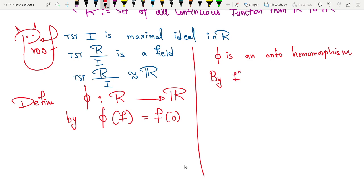By first isomorphism theorem, we can write R mod ker(φ) is isomorphic to ℝ. Now let's talk about the kernel φ. The kernel φ is the collection...